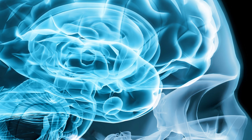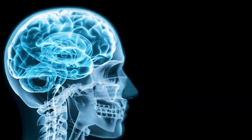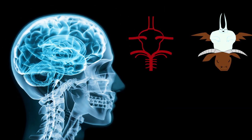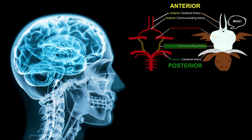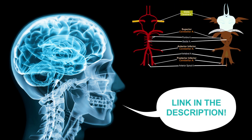Let's look more closely at brain areas supplied by different arteries. If you need a review of the arteries of the brain, please check out my video on the topic — link in the description. We're going to look separately at blood supply in the cerebrum, cerebellum, and brainstem, starting with some transverse sections of the cerebrum.